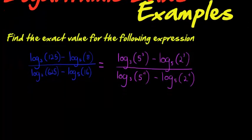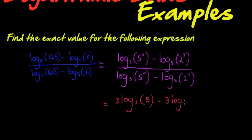This is going to become log₃... The exponent may become the coefficient and this one as well. So both will have a 3. So this will have 3 and this is 3 log₃(5) minus 3 log₅(2).